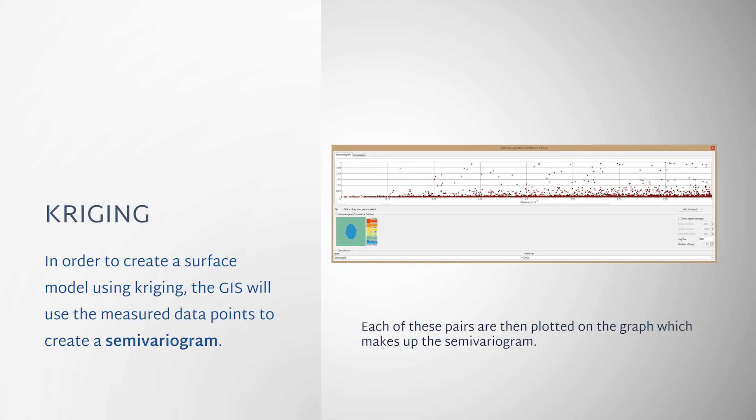The expectation is that there will be small differences in measured values between pairs that are close together. Pairs that have greater distances between them are expected to have larger differences in measured values. Each of these pairs are then plotted on the graph which makes up the semi-variogram.